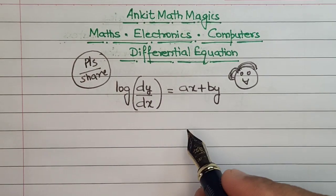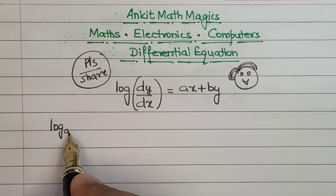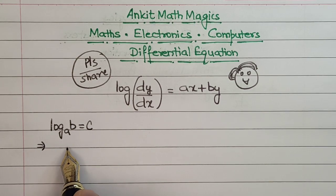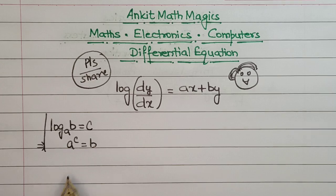For this we will use a property of logarithms: if log base a of b equals c, then this can be written as a raised to the power c equals b.